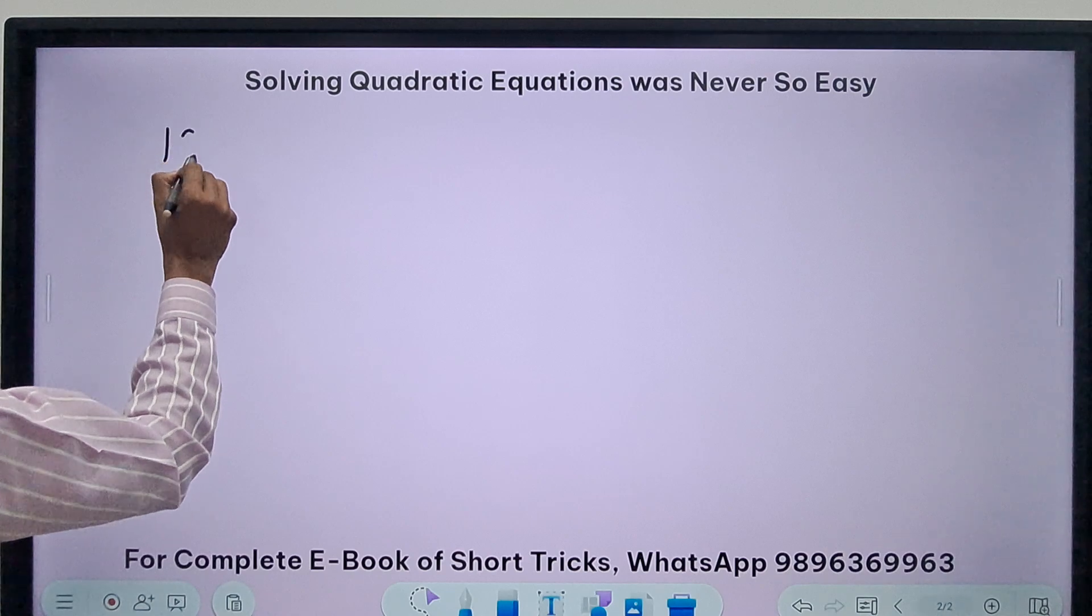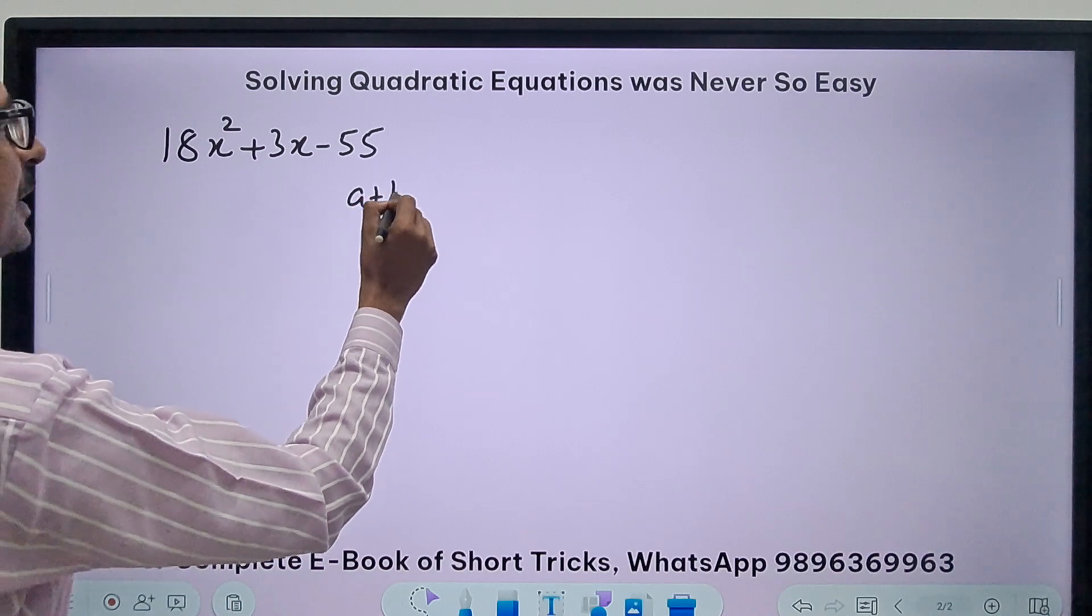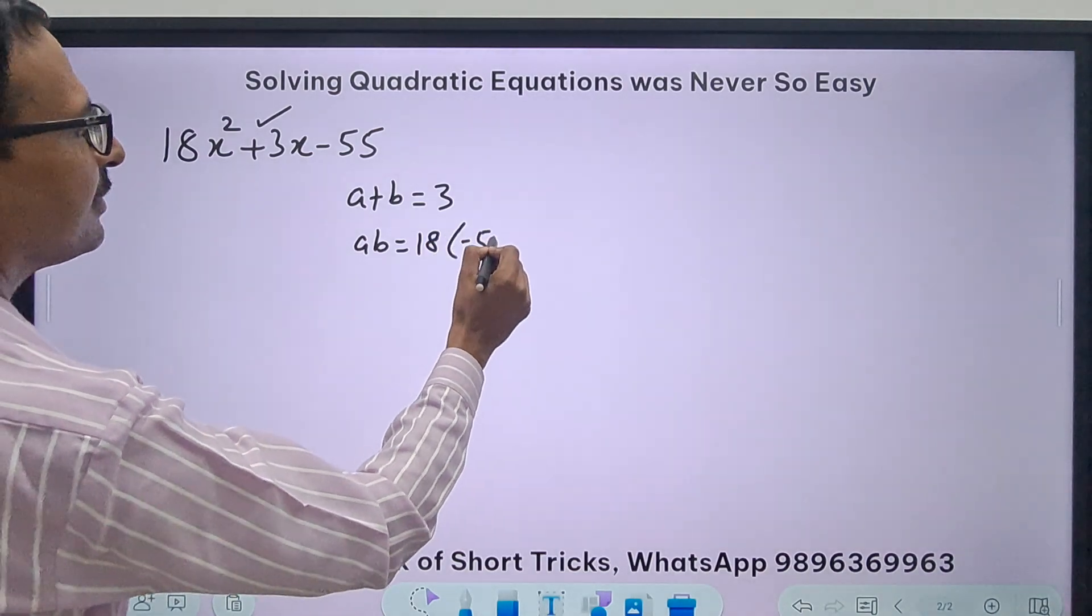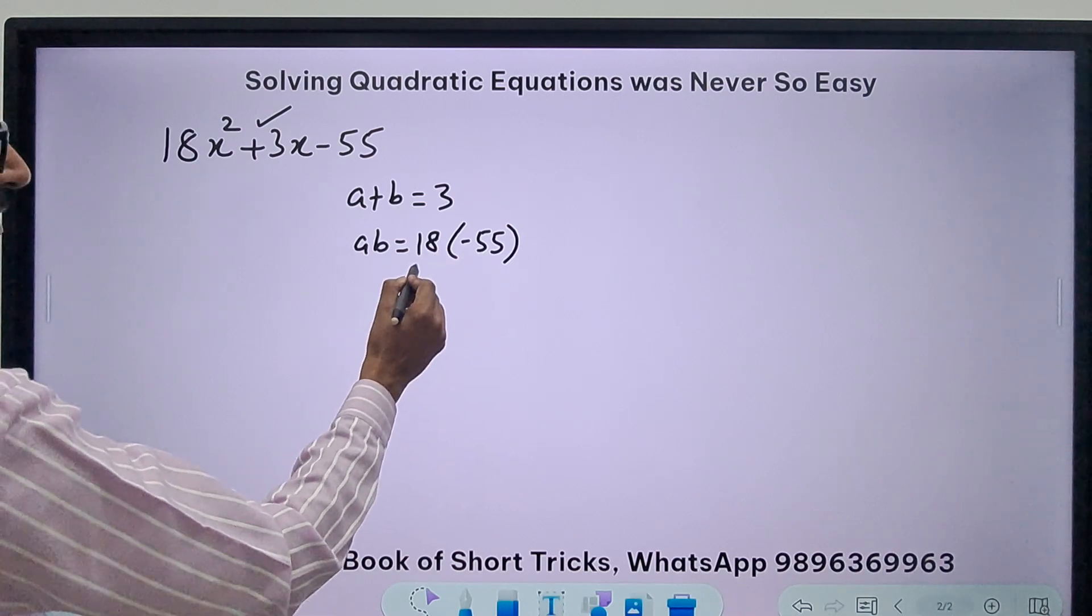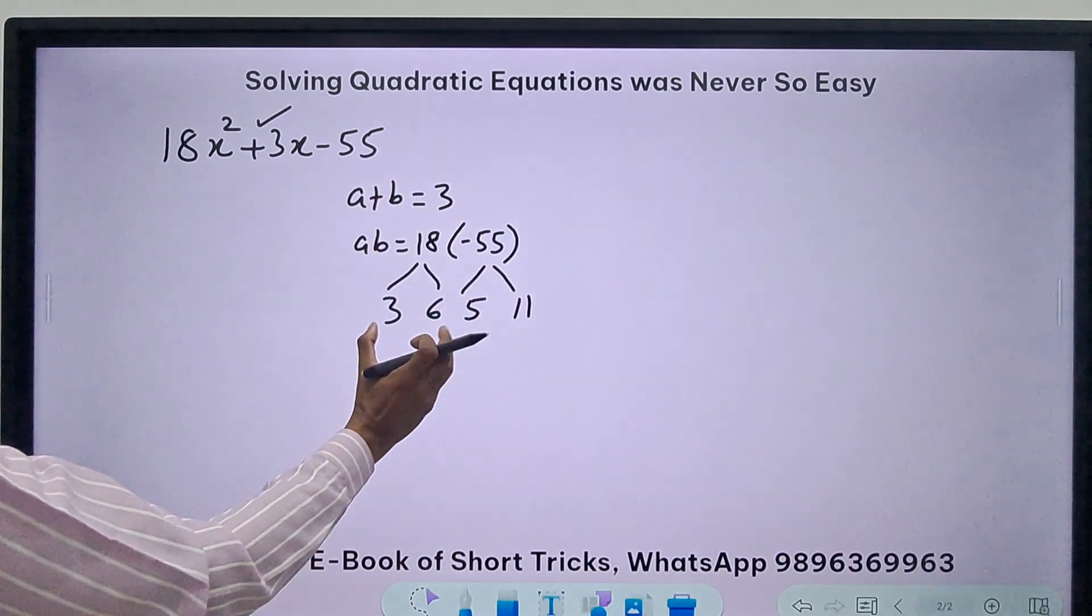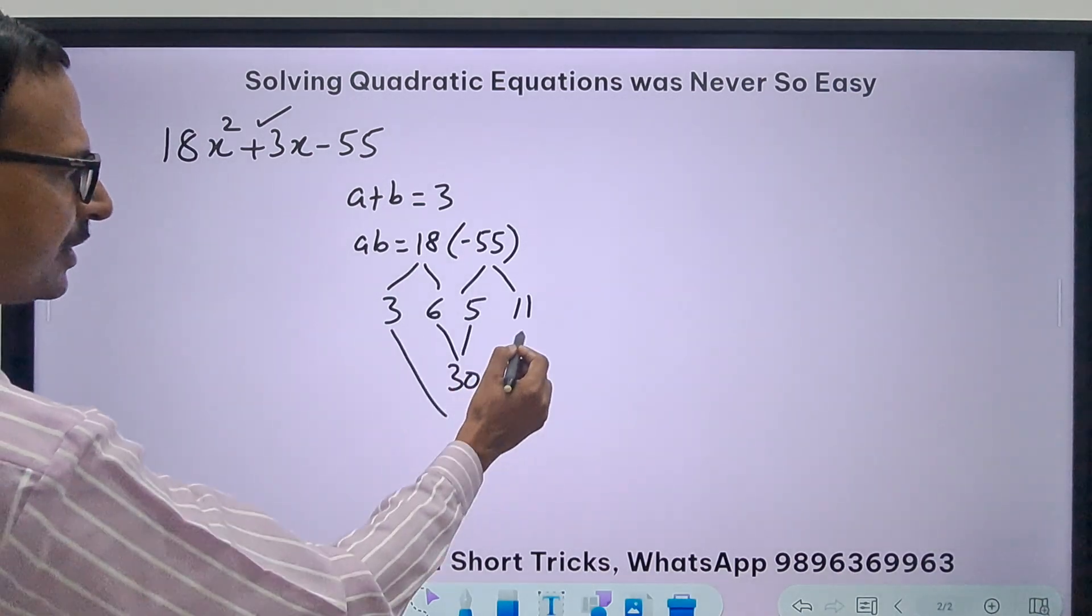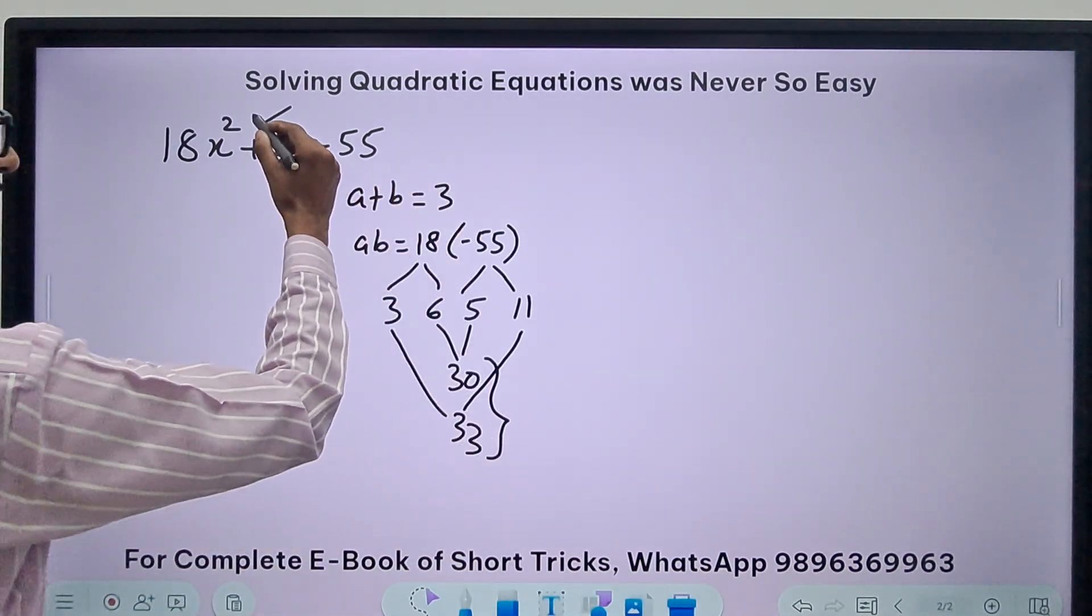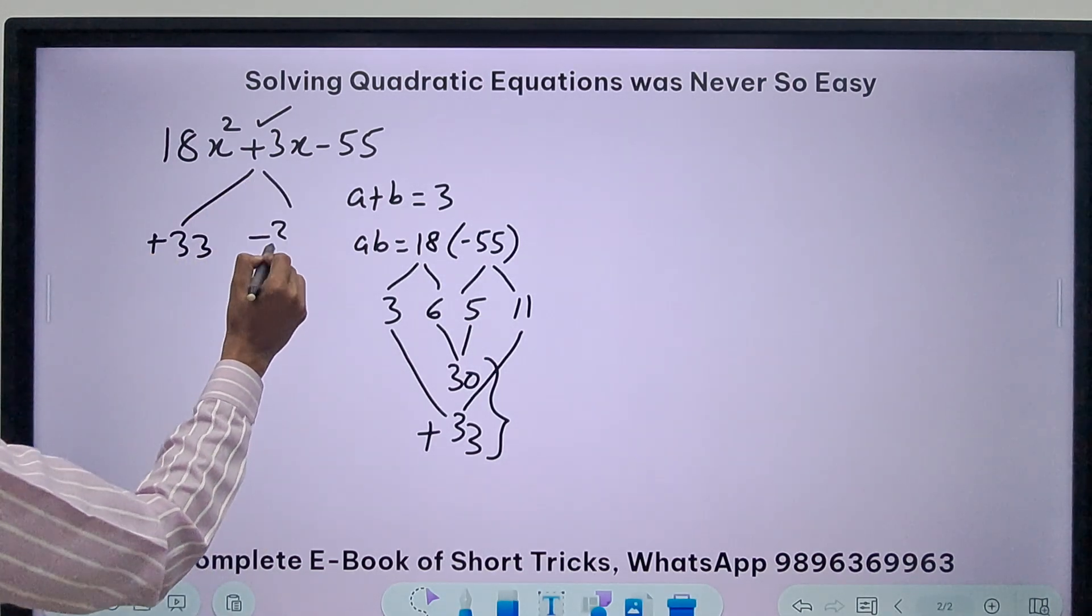Let's have another question. We have 18x² + 3x - 55. What are the middle term split factors? A plus B is 3 and AB is 18 into -55. If I want to split this, I have to break it into simpler factors. This is 3 times 6 for 18, and this is 5 times 11. I need a 3 so I need to be very close. I can't have 66 and 15. If I have 6 and 5, 30, and 11 and 3, 33. Wow, 33 and 30. Yes, the difference is 3.